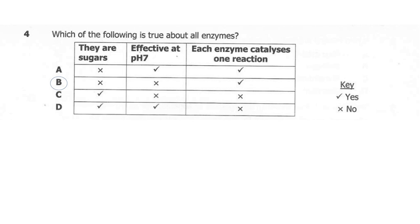The correct answer here is B: each enzyme catalyses one reaction. Enzymes are not sugars — they are actually made of proteins. And not all enzymes are effective at pH 7; that is salivary amylase. You have enzymes which work in acidic as well as alkaline environments. All enzymes catalyze only one reaction because enzymes are specific.